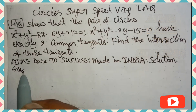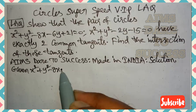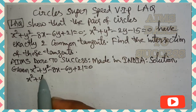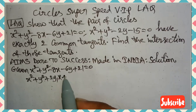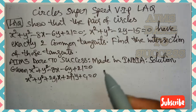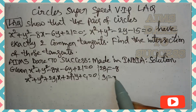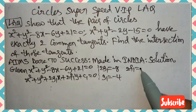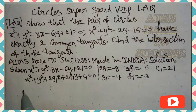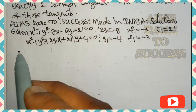Solution: The first circle is x² + y² − 8x − 6y + 21 = 0. Comparing with x² + y² + 2g₁x + 2f₁y + c₁ = 0: the x-coefficient gives 2g₁ = −8, so g₁ = −4. The y-coefficient gives 2f₁ = −6, so f₁ = −3. The constant term gives c₁ = 21.